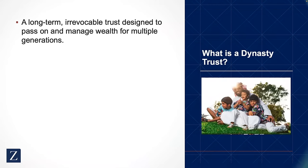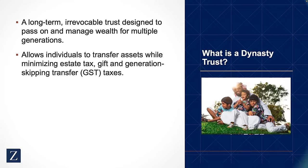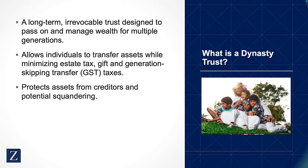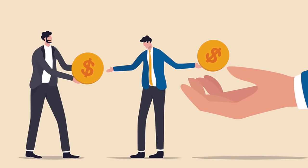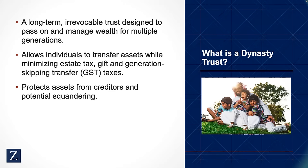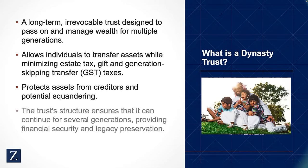A dynasty trust is a long-term, irrevocable trust that is built to pass on and manage wealth for multiple generations. It allows you to transfer assets into the trust and minimize estate tax, gift, and generation-skipping transfer tax. It's designed to protect your assets from your creditors as well as from the creditors of your beneficiaries, your kids, and it avoids them from squandering the wealth that you have worked so hard to accumulate. The trust allows its existence to continue for multiple generations, providing financial security for kids, grandkids, and great-grandkids, preserving your legacy.